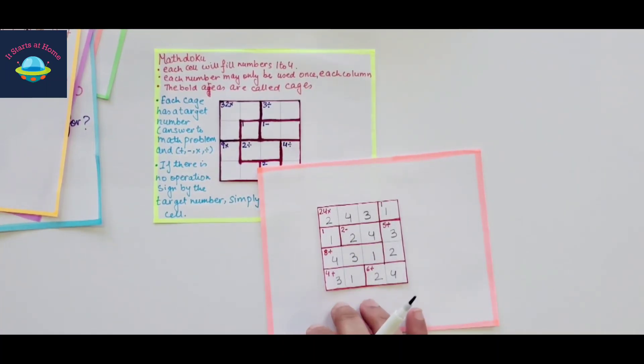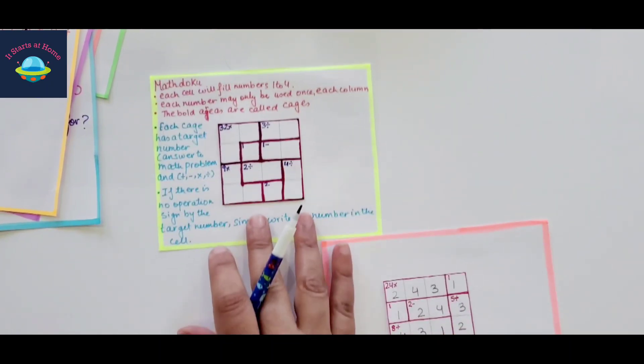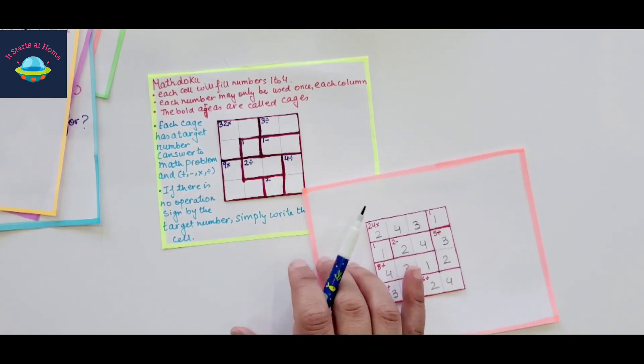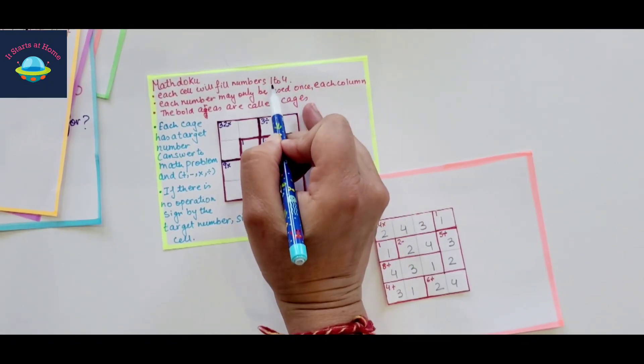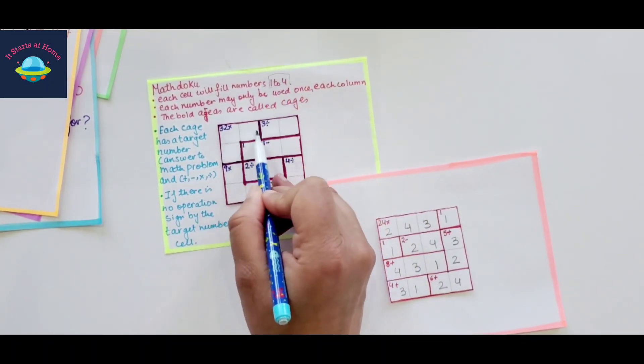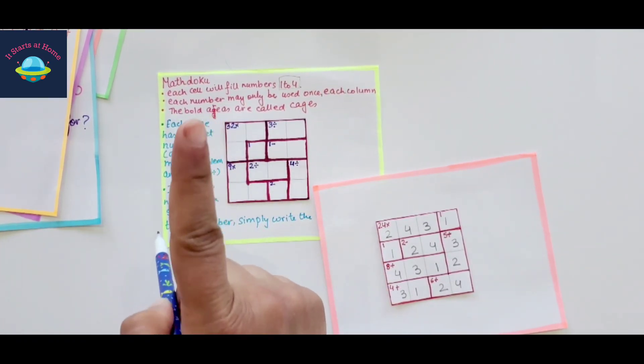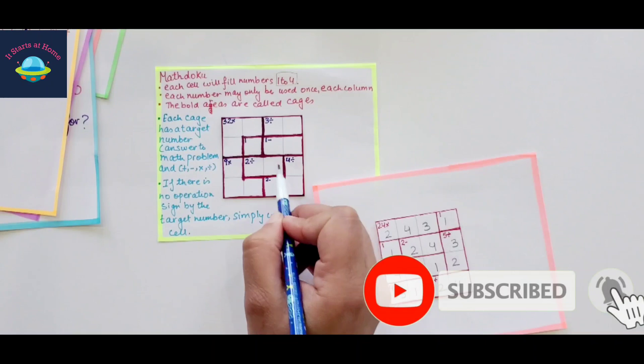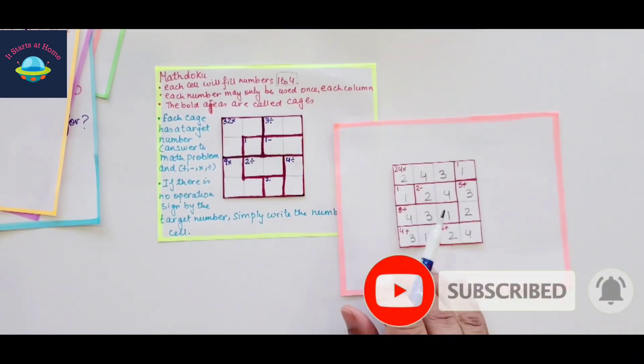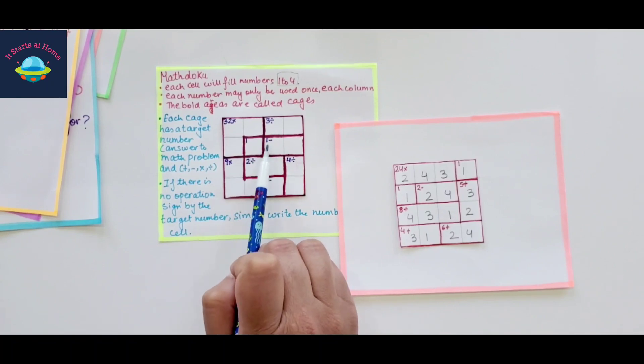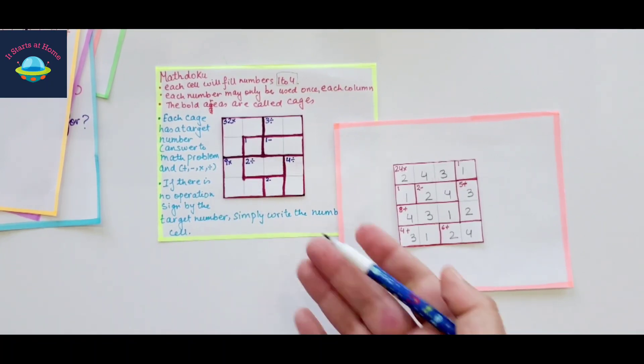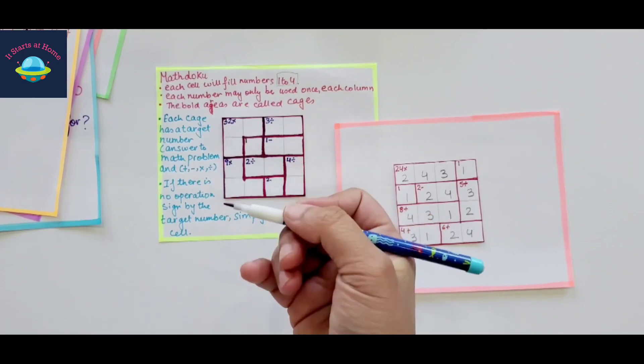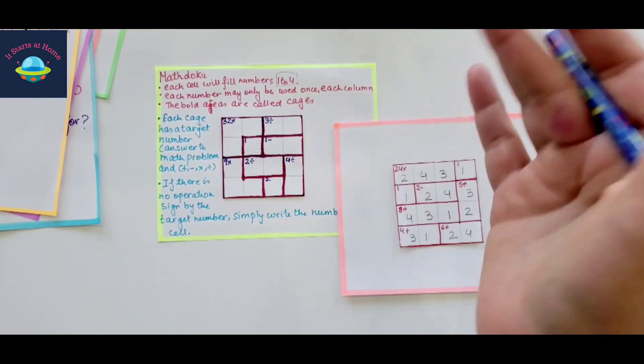I have just shared these two and I've solved one here and I'm going to read you what are the rules and regulations here. So primarily you have a grid and it could be 2 by 2, 3 by 3, 4 by 4. This is the grid that I have taken. Each cell will fill in numbers 1 to 4. So this is the only thing that you can use, numbers from 1 to 4 in each one of them. Each number may only be used once in each column. The bold areas are called cages. If you see the bold areas, these extra lines that you see in both of them, they are called cages.